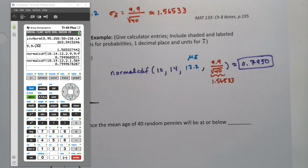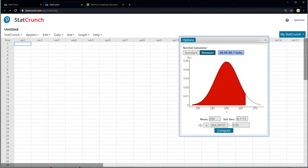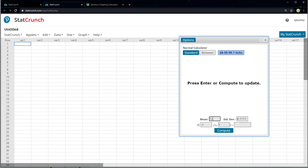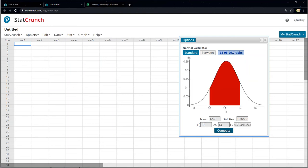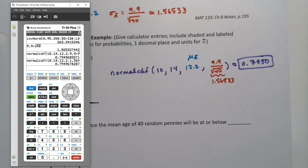Now if I'm in StatCrunch, let's see here. I want a between, so I'm going to click on between. I know my mean is 12.2, and then I'm going to have to use the decimal. So you have to on StatCrunch. So 1.56533. And then I want 10 here and I want 14 here. And I can either press enter or click compute. And there you have it. 7, 9, 4, 9, 6. Looks very familiar.